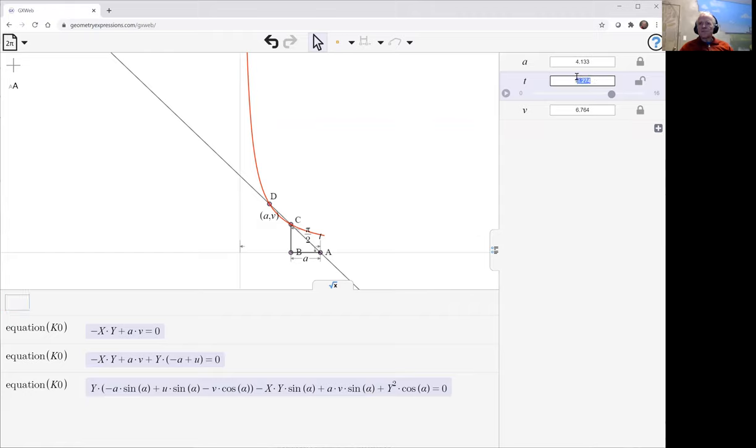If I make T go a little further, we can see how our mechanism traces out that curve.